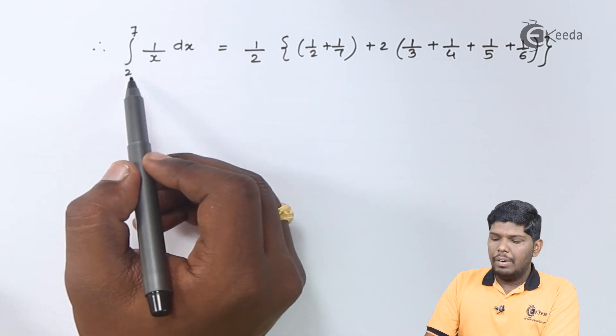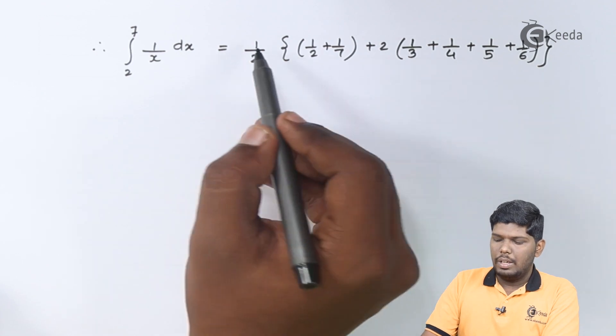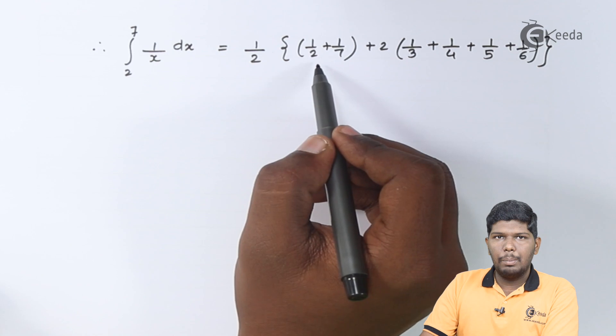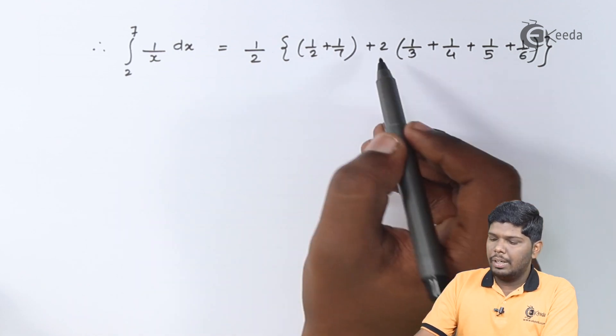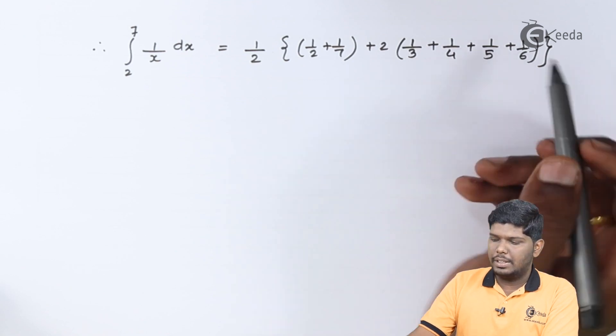Using the trapezoidal rule we have integral 2 to 7, 1 by x dx, that equals h by 2. The value of h is 1. In bracket we have y0 plus yn, that is first term is 1 by 2 and last term is 1 by 7, plus twice we have added the remaining terms, that is 1 by 3, 1 by 4, 1 by 5 and 1 by 6.